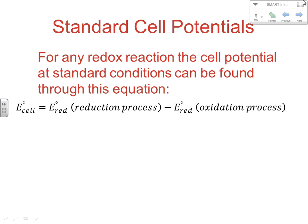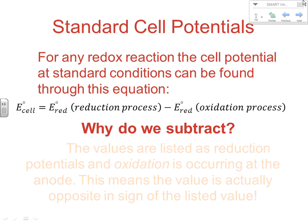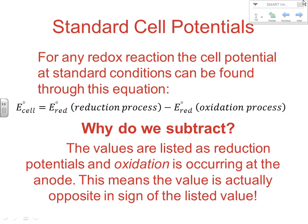For any redox reaction, the cell potential at standard conditions — one molar concentrations, one ATM pressure, 25°C — is calculated using this equation: we look up the reduction potential for our reduction process, look up the reduction potential for our oxidation process, and take the reduction value minus the oxidation value. We subtract because the oxidation process is not a reduction process. The values listed are reduction potentials, but oxidation is occurring at the anode, so we make it negative to reflect that it's an oxidation reaction — hence the subtraction.